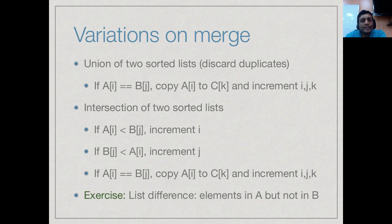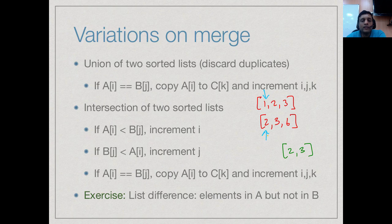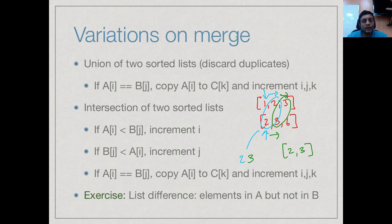We can also intersect two lists. For lists 1, 2, 3 and 2, 3, 6, the intersection is 2, 3. When a[i] ≠ b[j] they can't be in the intersection; we advance the pointer pointing to the smaller value since the larger may still find a match. When a[i] = b[j] we copy that value and advance both pointers. Merge is a very generic operation: we can merge into one big sorted list, remove duplicates for set union, or keep only common elements for set intersection.